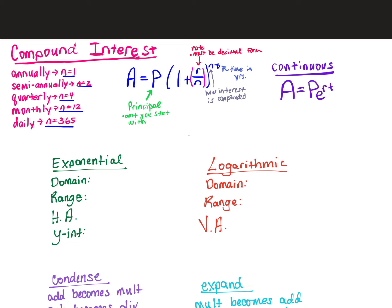If it's annually, your N is 1. Semi-annually, it'll be 2. Quarterly, it'll be 4. Monthly, it'll be 12. Weekly, it'll be 52 — that's not listed for you, but weekly is 52. And daily would be 365.